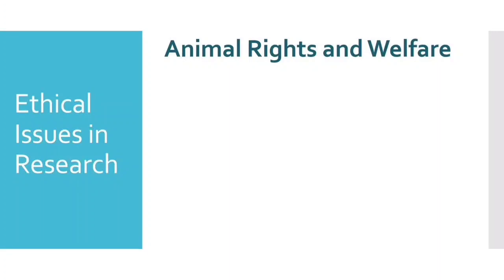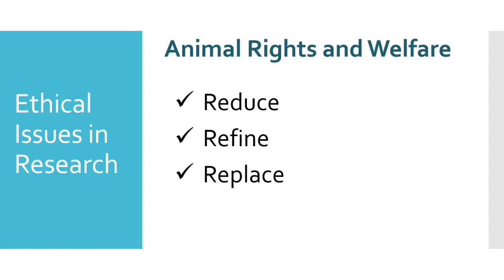There are three R's to remember when using animals for research: reduce, refine, and replace. Reduce means that if we can reduce the number of animal subjects, that is recommended, and if we can avoid casualties that would also be better. Refine means that if we cannot avoid harm, our procedures should be carefully planned to minimize the pain and suffering that animal subjects might experience. Replace means that as much as possible, if there is a possibility of replacing animals with non-living or non-biological subjects, that should be explored.